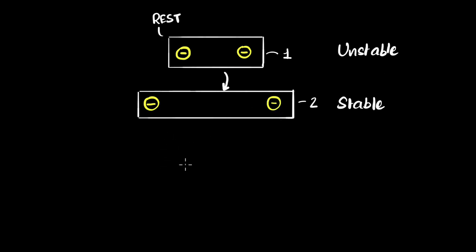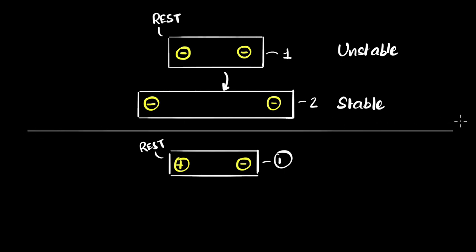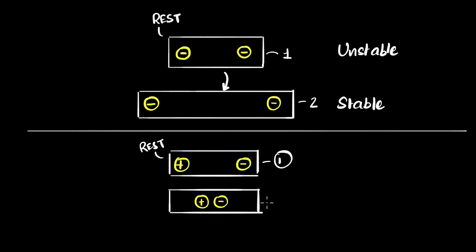Let me give you one more quick example — two examples are better than one. Let's say I have two charges, this time one positive and one negative. Again, I start them at rest. That's arrangement one. Now let them go. They're going to attract each other and after some time they would have come closer to each other. I let them go from rest and I have a new arrangement. Whatever new arrangement you get, by definition, is more stable compared to the starting arrangement. So this is unstable, and this is stable.